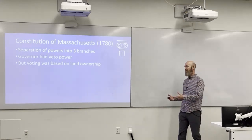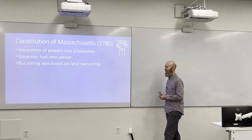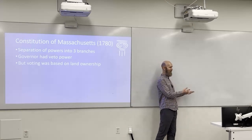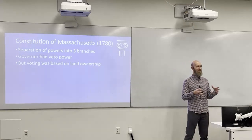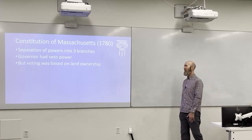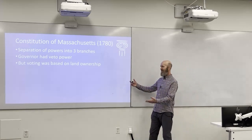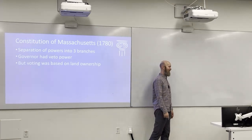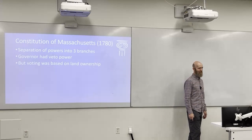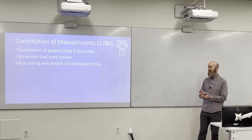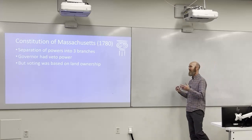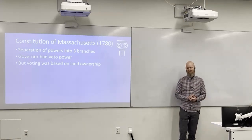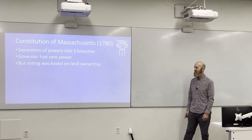The Massachusetts Constitution established separation of powers in the United States. The governor was fairly powerful and had veto power, just like the U.S. president. So it was establishing concepts and principles that would become part of the U.S. Constitution — though not exactly the same. For example, your ability to vote was based on land ownership. But it did have three branches of government and separation of powers, meaning each branch had different powers and could check the other branches.